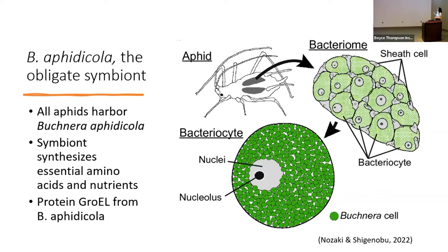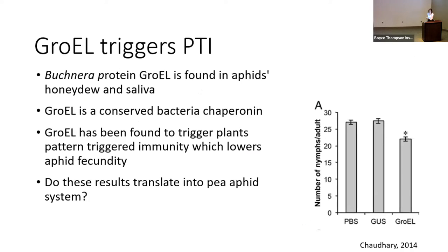From Buchnera we also get the protein GroEL, which has been shown to be expressed in the aphid's honeydew and saliva as they feed on plants. GroEL is a conserved bacterial chaperone protein that folds other proteins. It has been found to trigger the plant's pattern-triggered immunity, which lowers aphid fecundity. This was demonstrated in a paper using Arabidopsis and green peach aphids, where plants treated with GroEL showed a significant reduction in the number of nymphs produced compared to buffer controls.